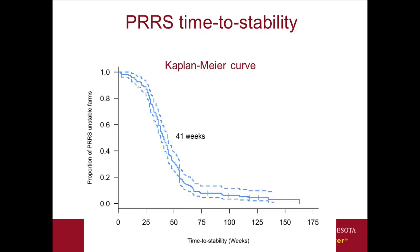This is the Kaplan-Meier survival curve. We start with 100% unstable farms, and as time progresses in weeks, some farms start achieving stability, so the percentage of unstable farms decreases over time. The median for this data was 41 weeks — meaning at 41 weeks, 50% of the herds had achieved stability. The time is measured from the outbreak to the last PCR-negative result, not the first negative test.